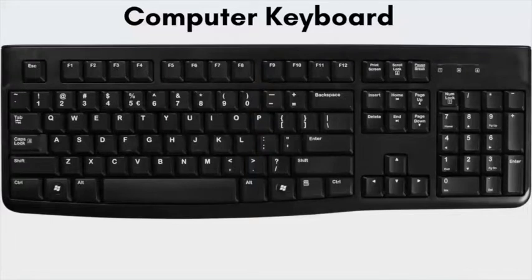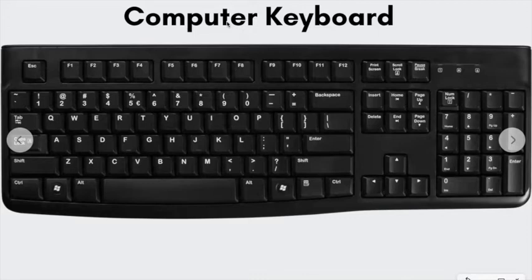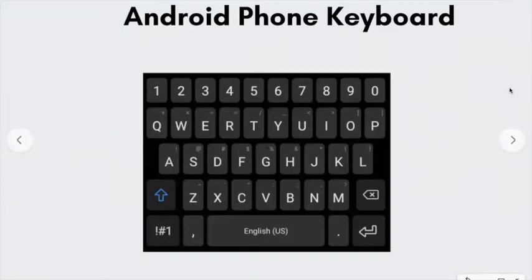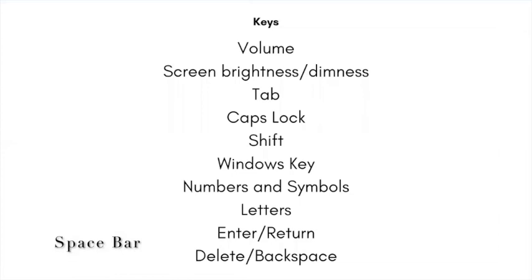Keyboards look different depending on the brand you buy and the device you're using. Generally, keyboards are larger on desktop computers and smaller on laptops. Many of the keys found on the laptop and desktop computers are not found on your smartphone or tablet, and many keys might be in different places. There are also keyboards designed for the visually impaired, or you can purchase large print stickers to place on your current keyboard. Here are some of the keys we are going to learn today. Pat yourself on the back if you know some of these already.